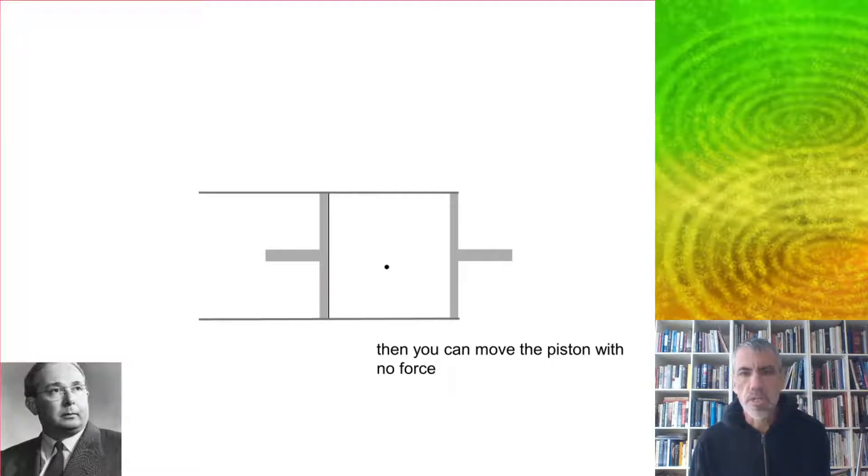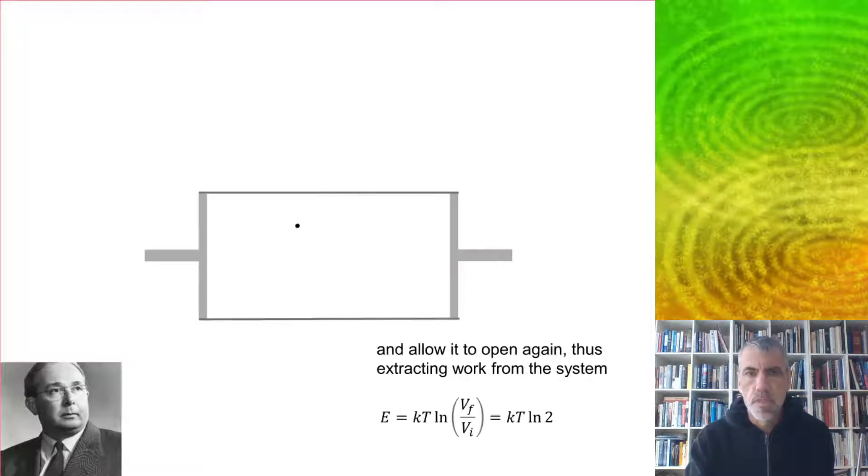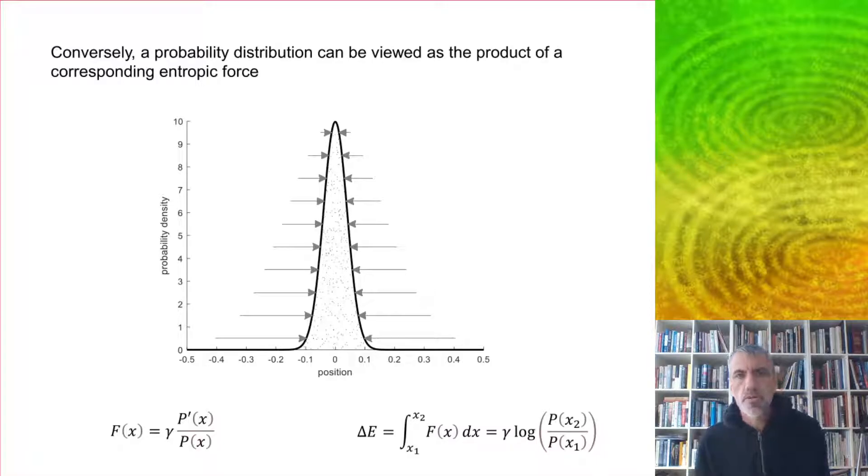In that case, we could move the piston with no force because it's not going to encounter that particle. And then we could allow it to open up again, and by doing that extract work from the system, which is given by this formula here. It depends on the logarithm of the final volume over the initial volume, which in this case is going to be logarithm of two.